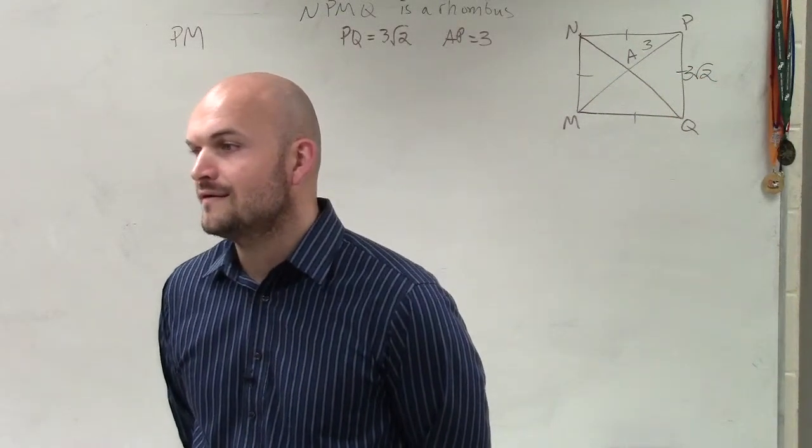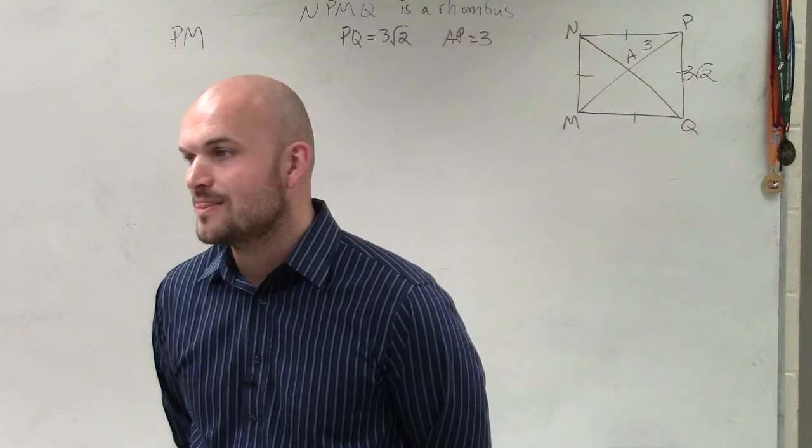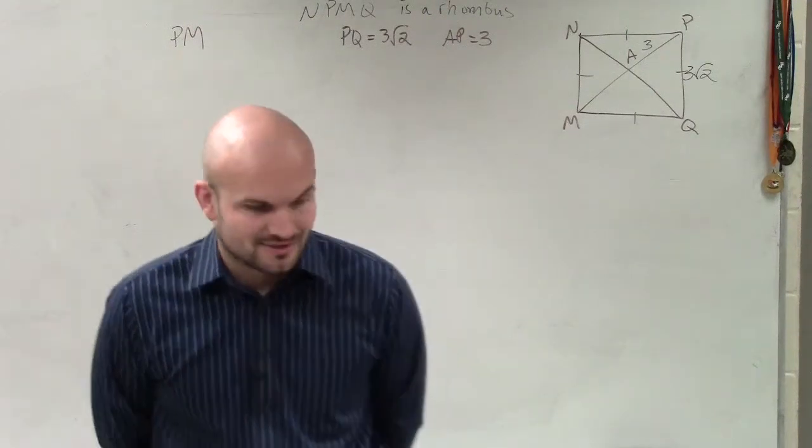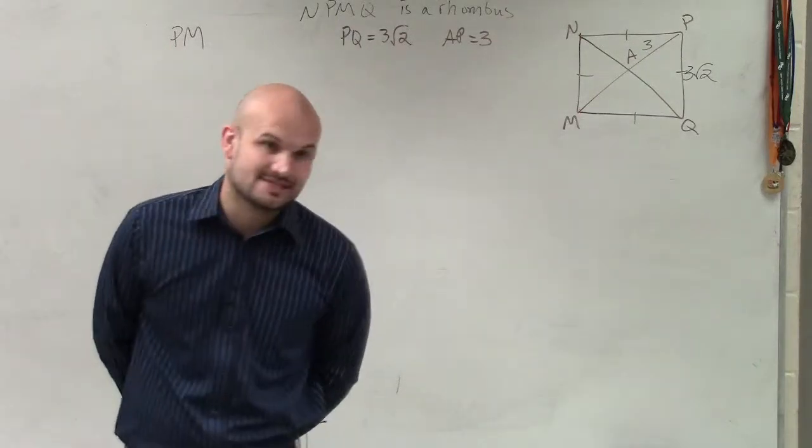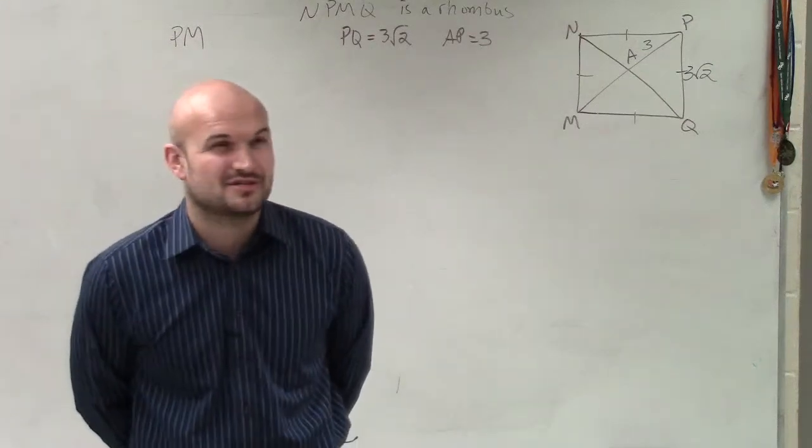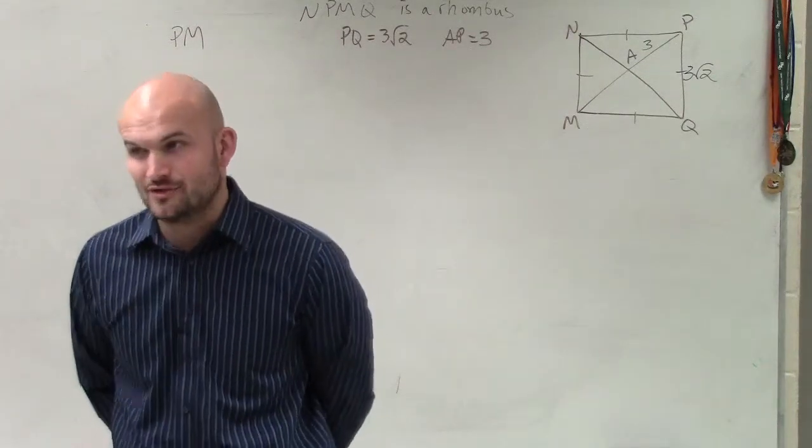Especially for a rhombus, the diagonals bisect the angles. They do bisect the angles. And that is true for a rhombus. It's also true for a square. And you're right onto the right point, but that's actually not what I'm looking for. But that's exactly correct.